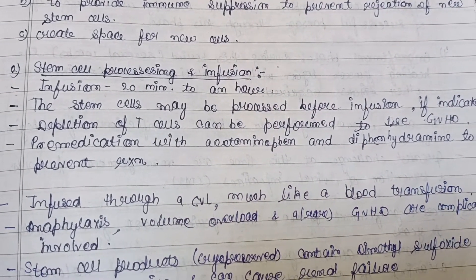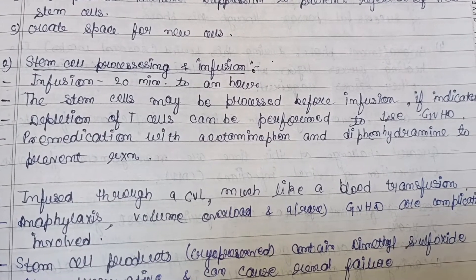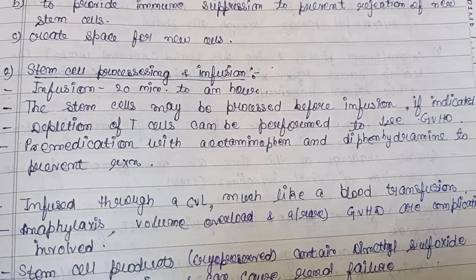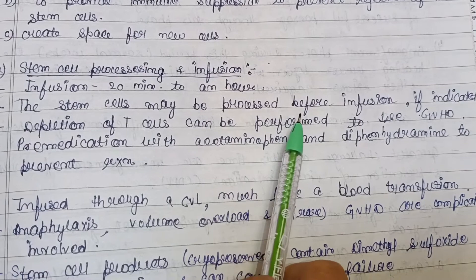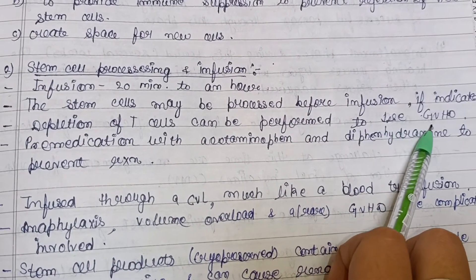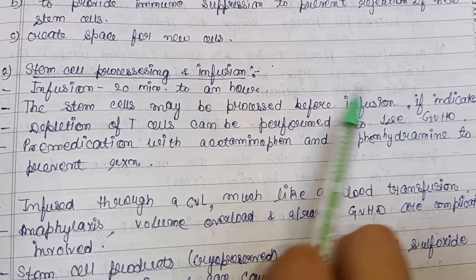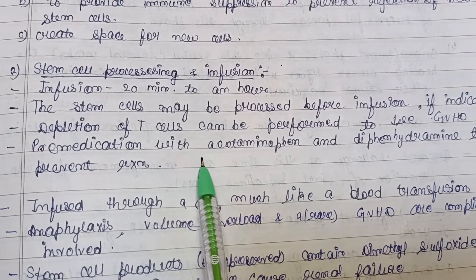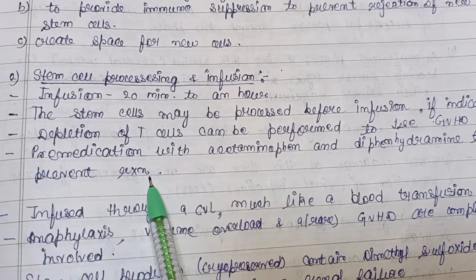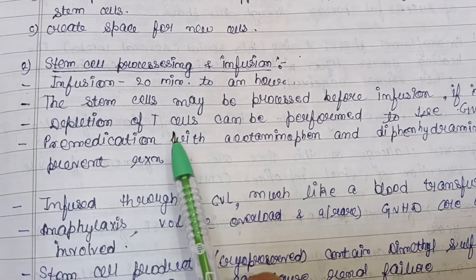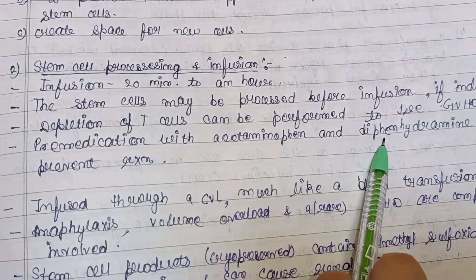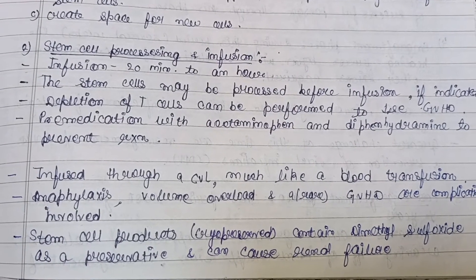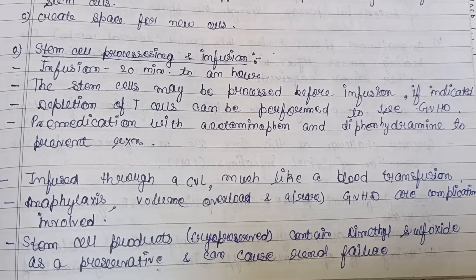Next is stem cell processing and infusion. Infusion takes 20 minutes to an hour. Stem cells may be processed before infusion — for example, T-cell depletion can be performed to decrease GVHD. Pre-medication with acetaminophen and diphenhydramine is given to prevent reactions when stem cells are infused. Stem cells are infused through a central venous line, much like a blood transfusion.